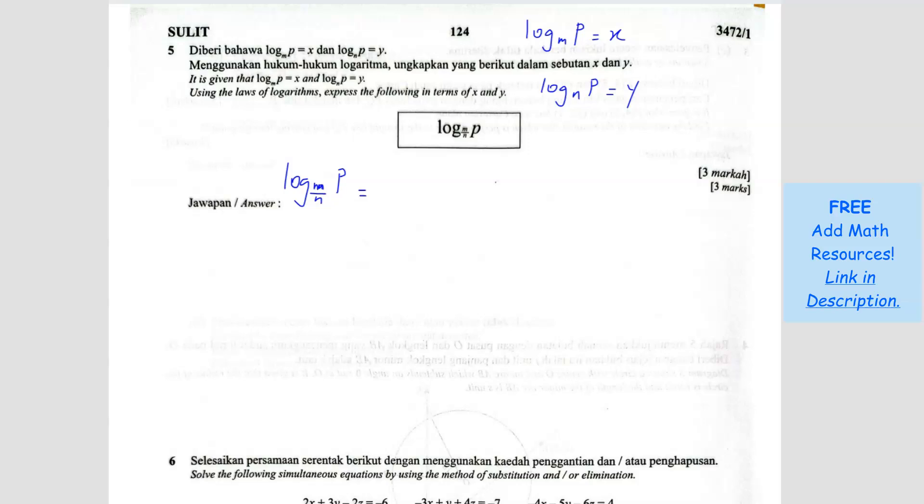So what we can do is we can swap these two, swap places. When we swap, it becomes a fraction. So it becomes 1 over, because I make it become a fraction, so now the P and the M over N will swap. The P comes down, M over N goes up.